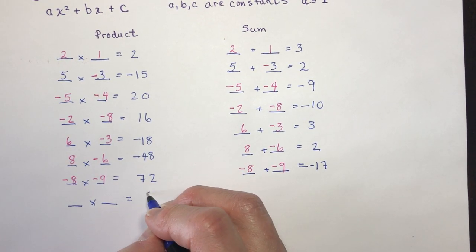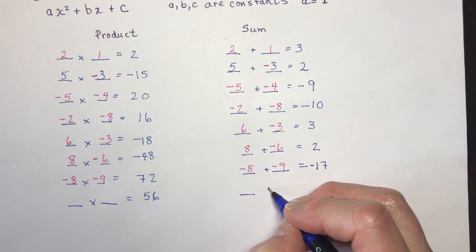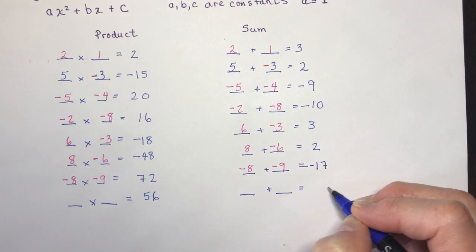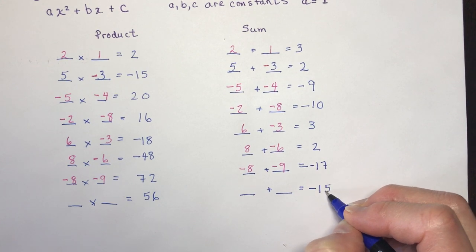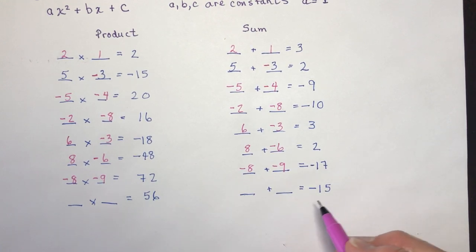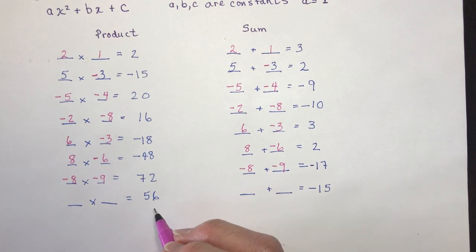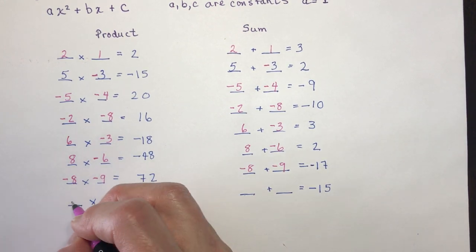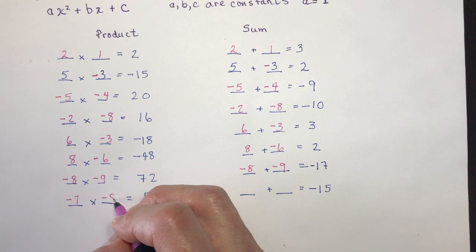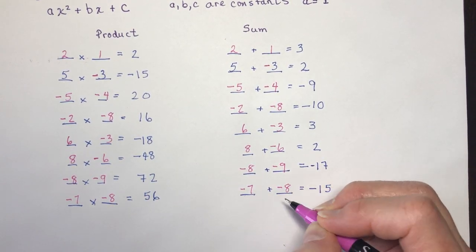Two numbers that multiply to give 56 and add to negative 15. Again, that means two negative numbers. Factors of 56: 8 times 7 is 56, so negative 7 and negative 8. It doesn't matter which order you write them — negative 7 plus negative 8 gives negative 15.